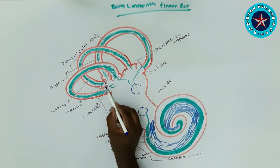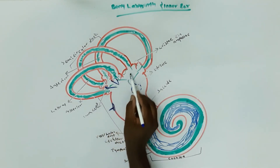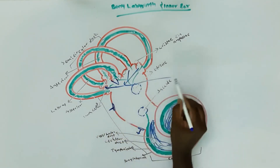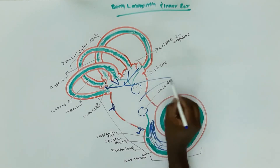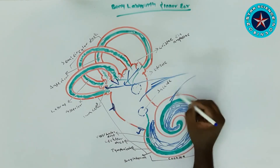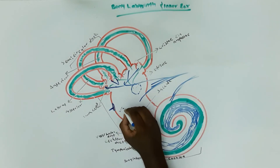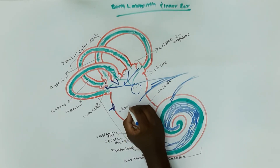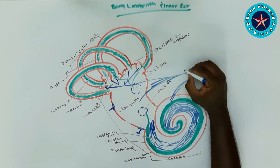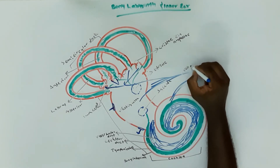For example, if the sound is from the right, the hair cells will bend to the left, and the fluid from the semicircular canal will move to the opposite side — through the posterior, lateral, and superior or anterior tubes. Conversely, if the sound is from the left, the hair cells will bend to the right side.